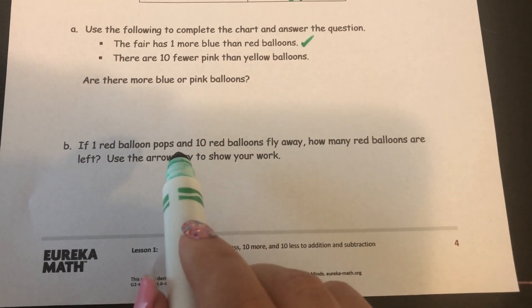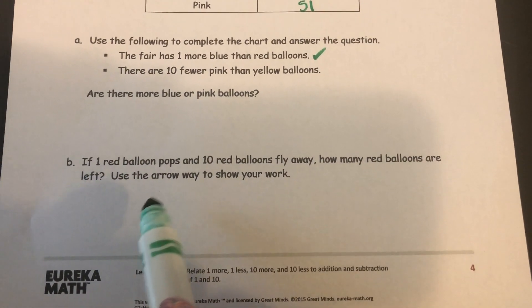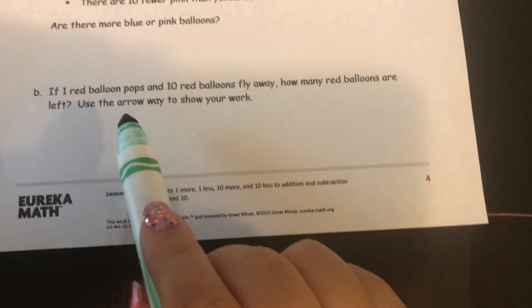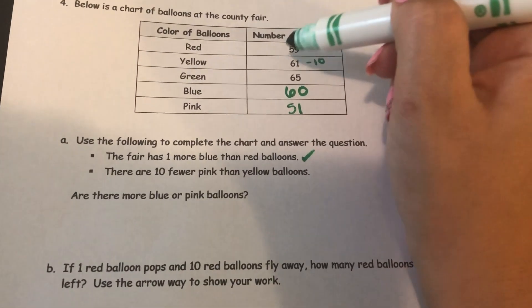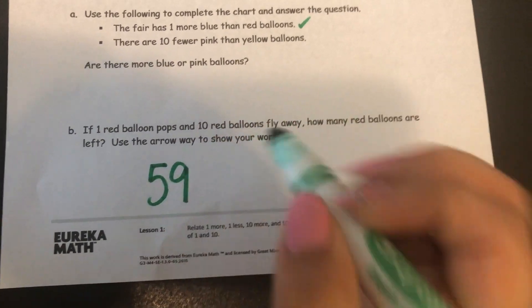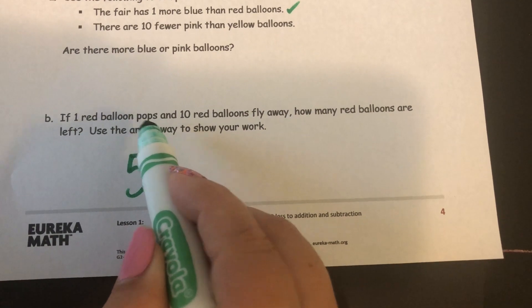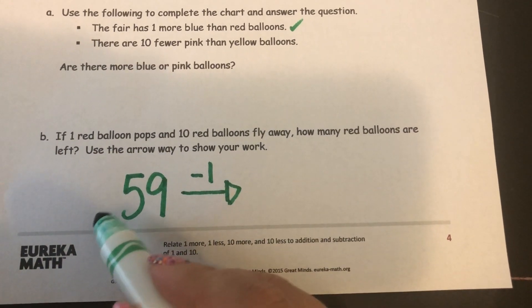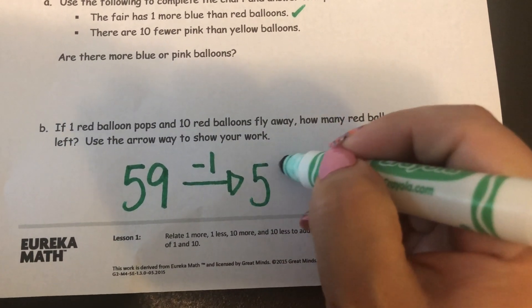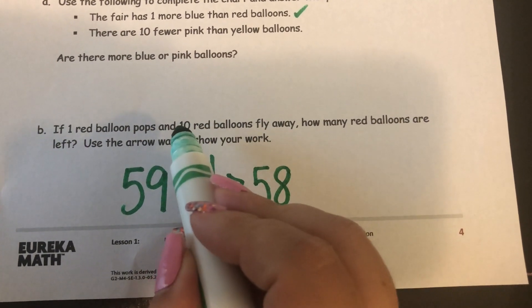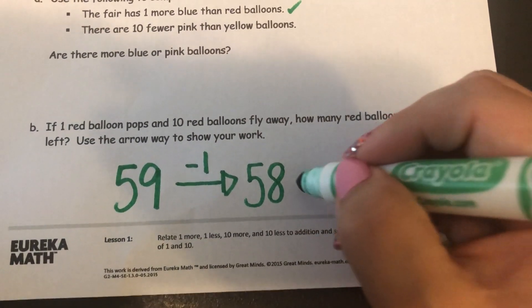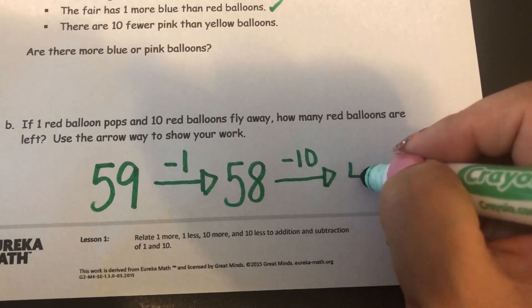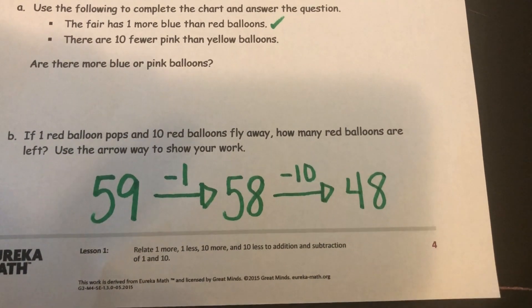If 1 red balloon pops and 10 red balloons fly away, how many red balloons are left? Use the arrow way to show your work. We start with 59 red balloons. 1 red balloon pops, so I write an arrow with minus 1 on it: 59 minus 1 is 58. Now 10 red balloons fly away, so I do another arrow with minus 10: 58 minus 10 is 48. And this is what they meant by use the arrow way.